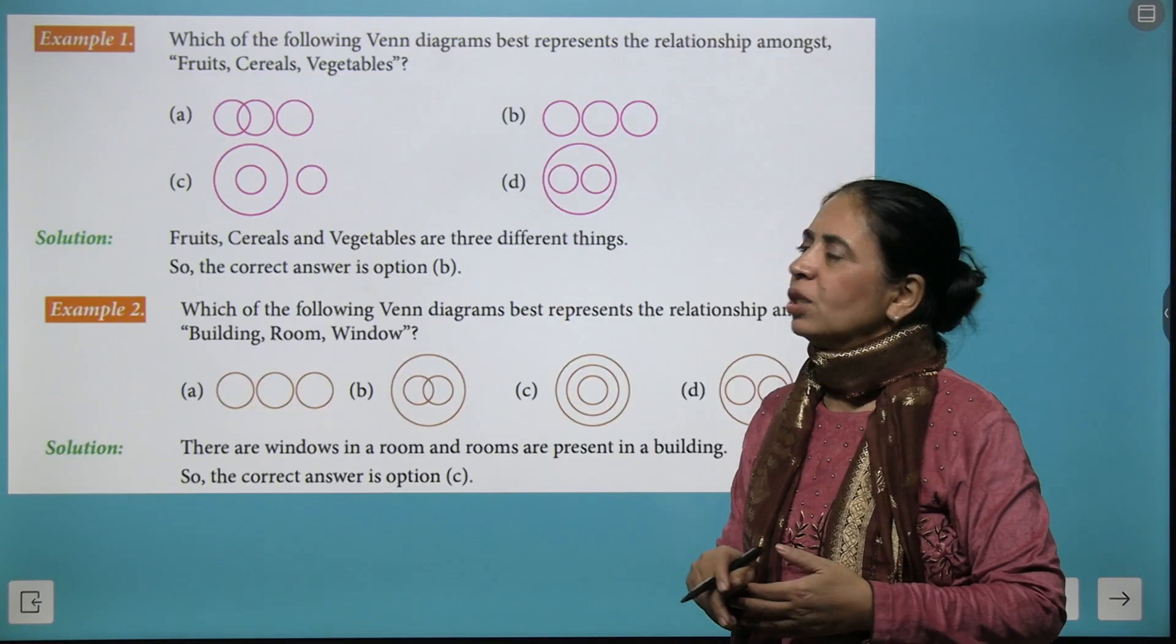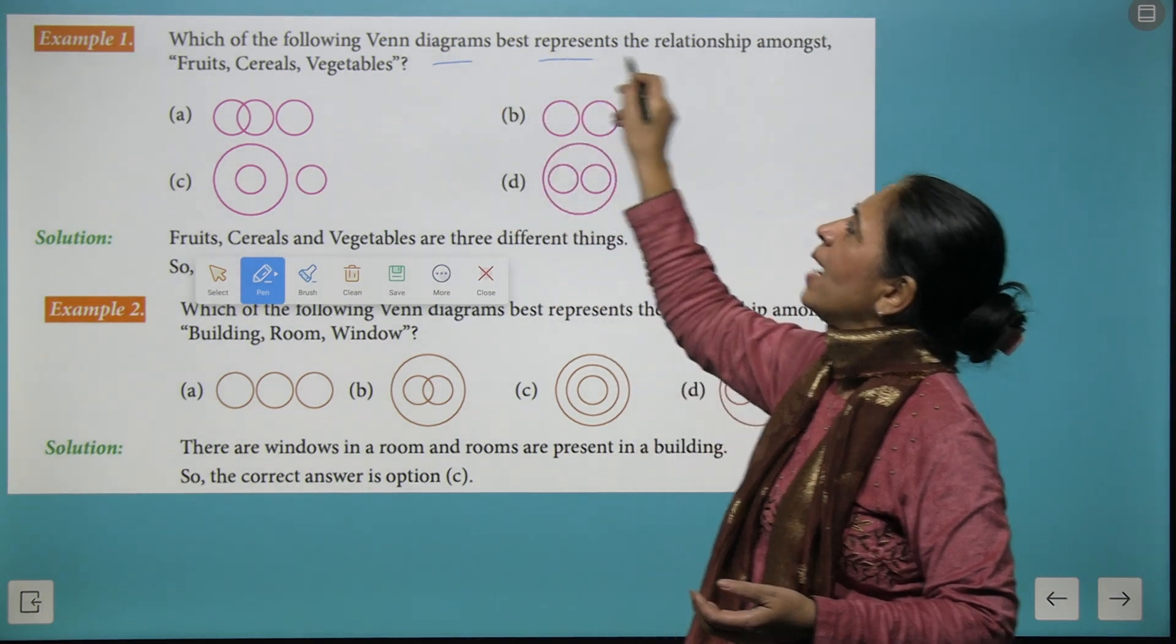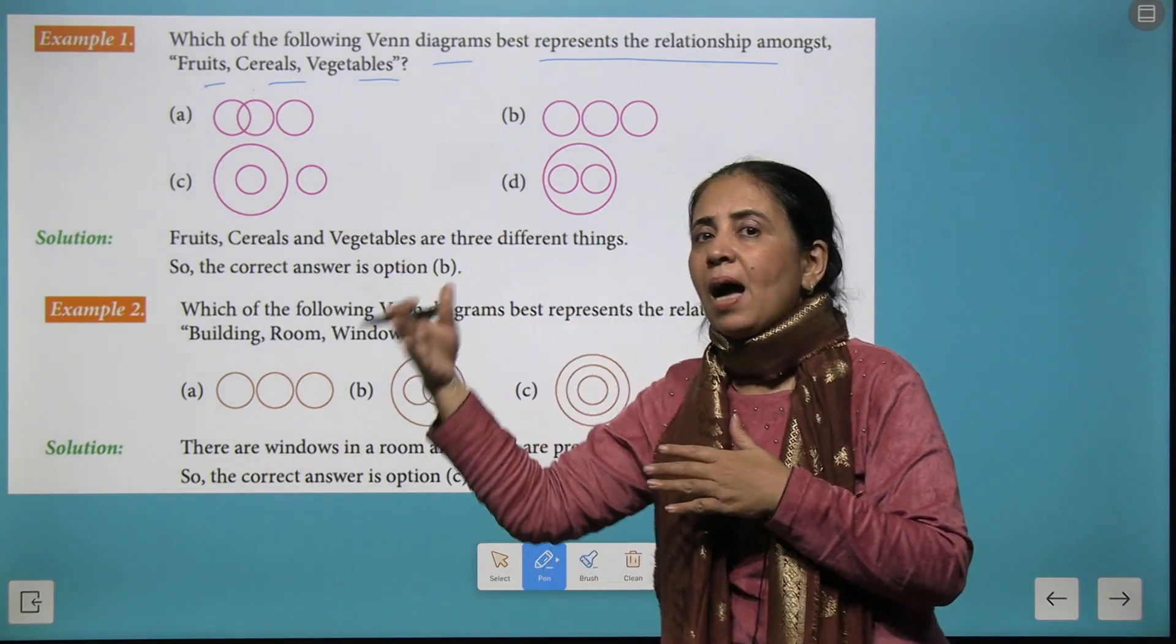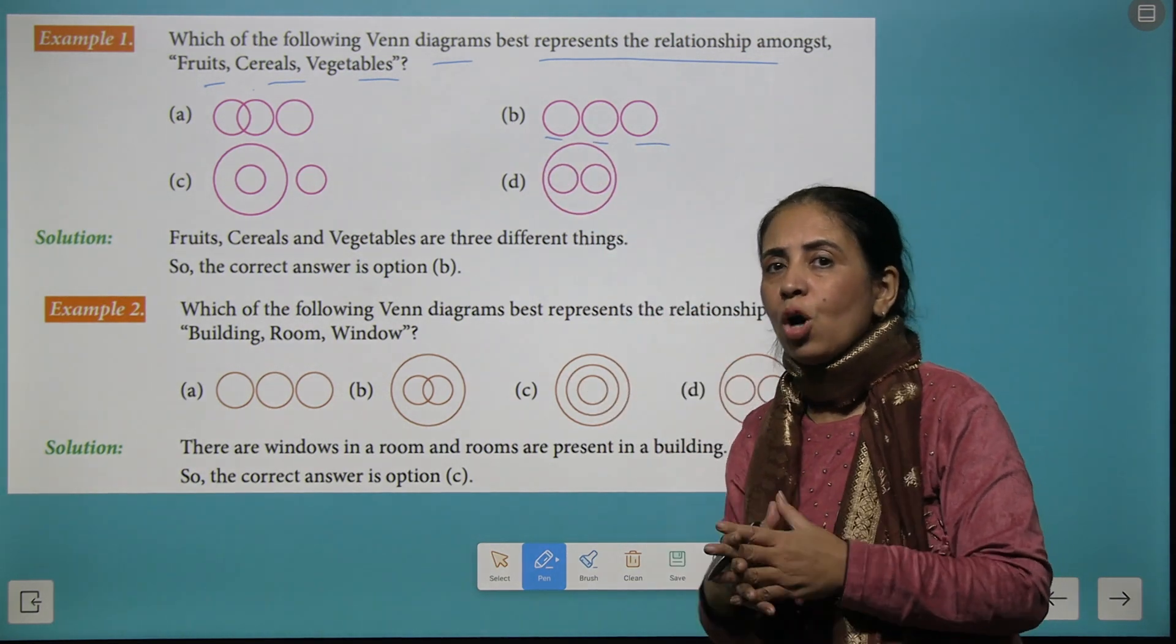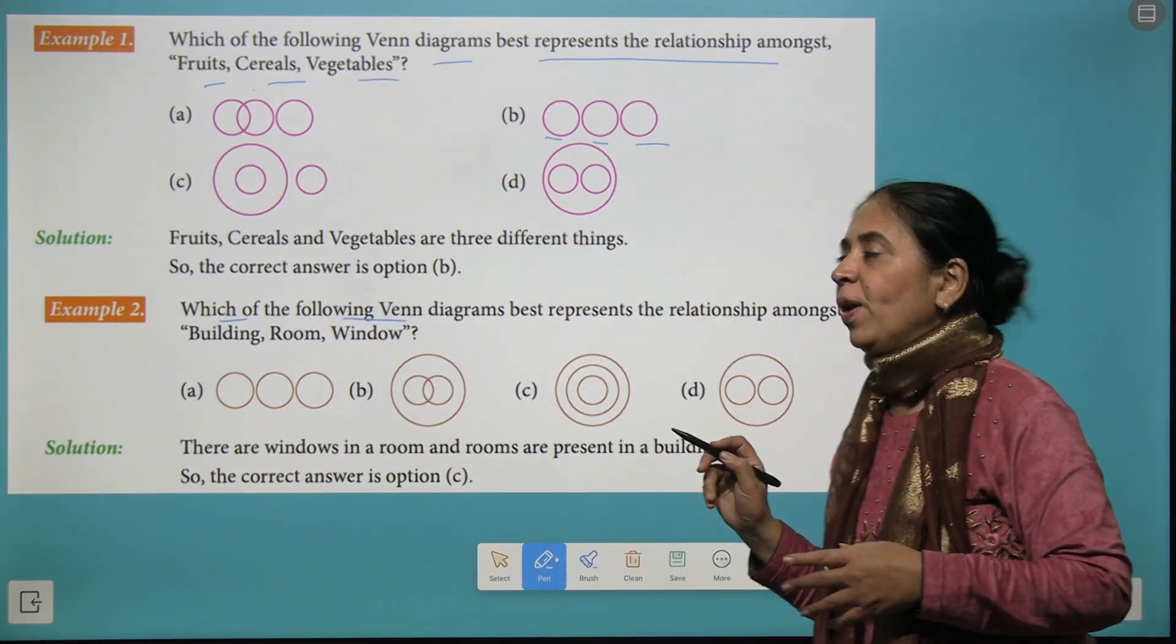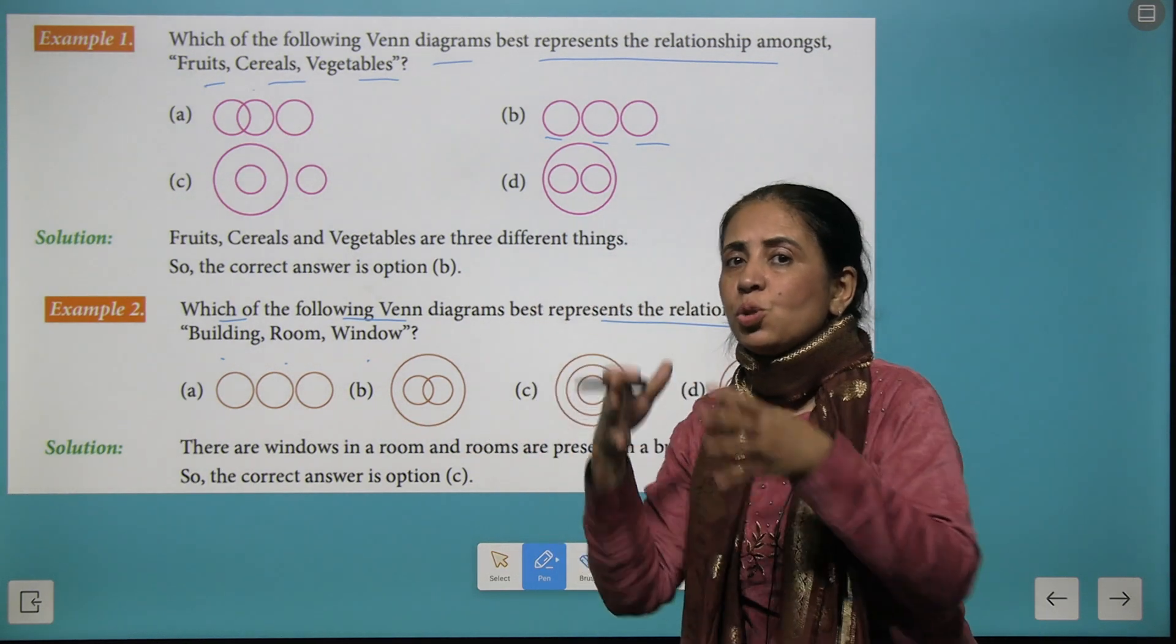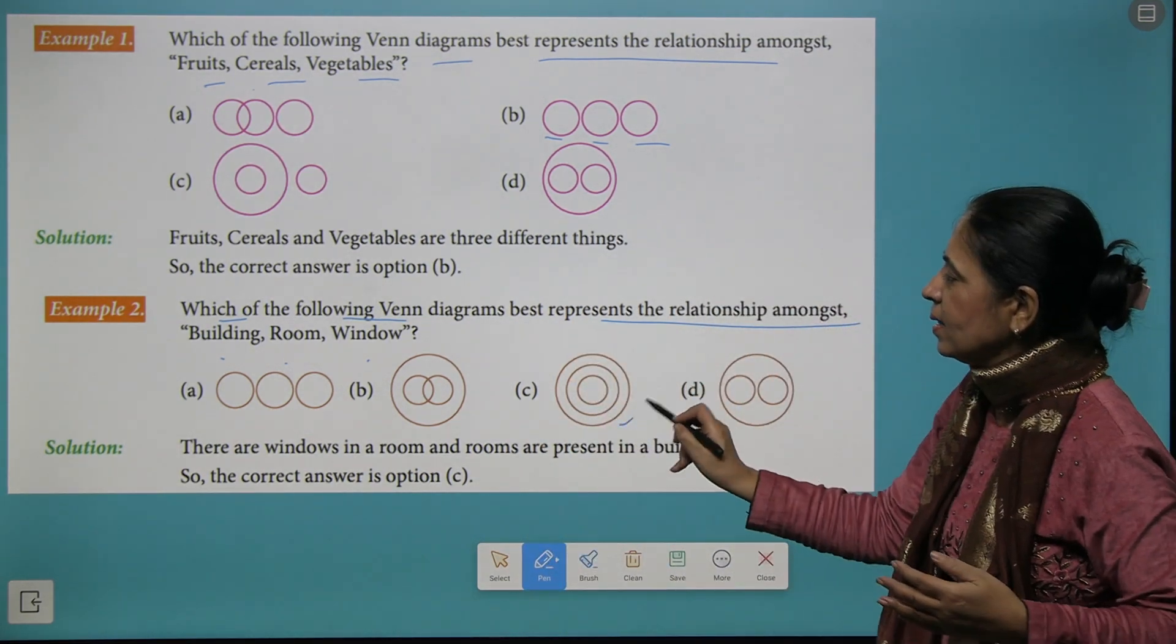Few more questions which are for your practice. The first one is: which of the following Venn diagrams best represents the relationship amongst fruits, cereals, and vegetables? If you do a little brainstorming, you will realize that fruits, cereals, and vegetables are three different families of the things which we eat, so it represents three different circles which are not intersecting at any place and B becomes your right answer. Next question is: which of the following Venn diagrams represents the relationship between a building, room, and window? Now just give a thought that a building has many rooms and each room has a window. That means window is a part of a room and room is a part of building. So looking at these answers, we could make a relation of concentric circles and C becomes your right answer.